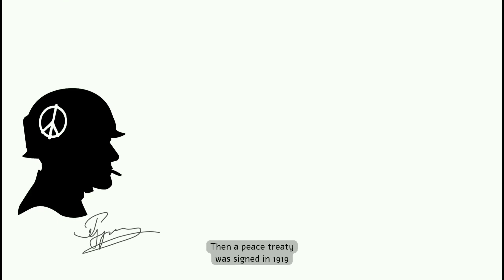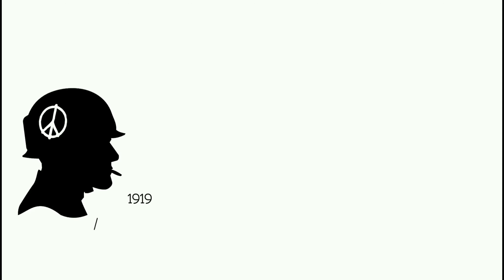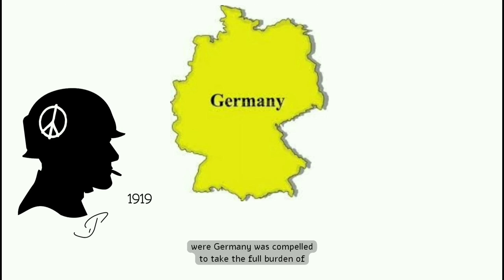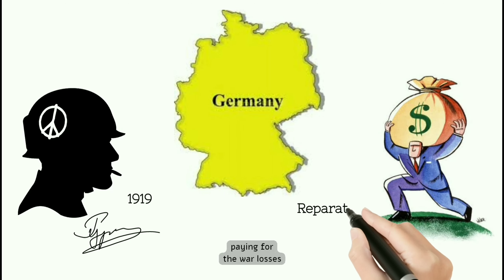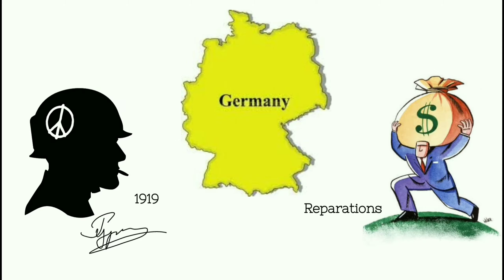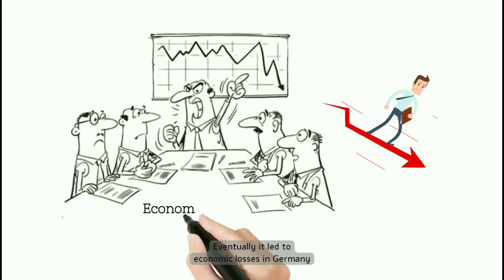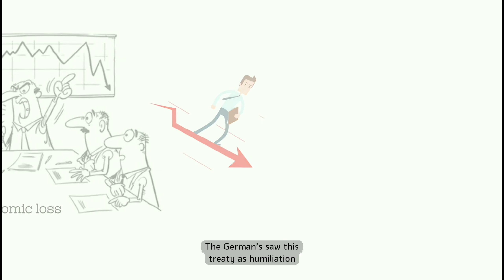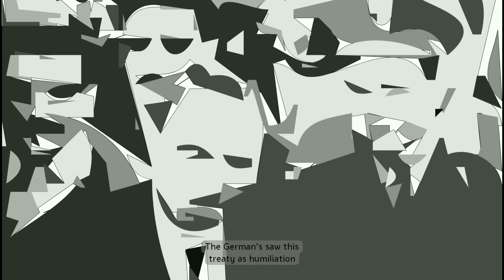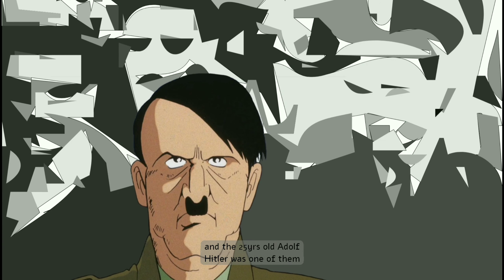Then a peace treaty was signed in 1919, where Germany was compelled to take the full burden of paying for the war losses. Eventually, it led to economic losses in Germany. The Germans saw this treaty as humiliation, and the 25-year-old Adolf Hitler was one of them.